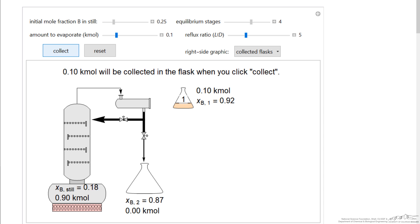First flask, and the mole fraction is 0.92. So we've enriched from 0.25 to 0.92 mole fraction of B. And then of course the mole fraction of B in the still has gone down because we preferentially depleted B, the more volatile component.